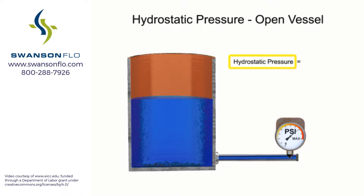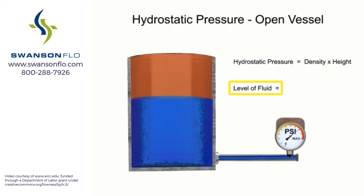To calculate hydrostatic pressure, the density of the material is multiplied by the height of the column. The level of fluid in a column can be determined by dividing the pressure value by the density of the material.